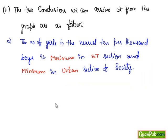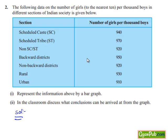The second conclusion is that the number of girls to the nearest 10 per thousand boys is the same for non-SC/ST — that is 920 — and for non-backward districts — that is also 920.